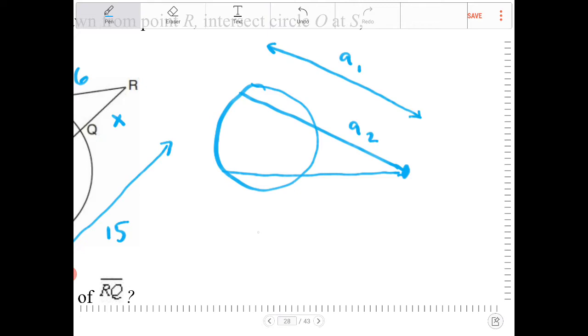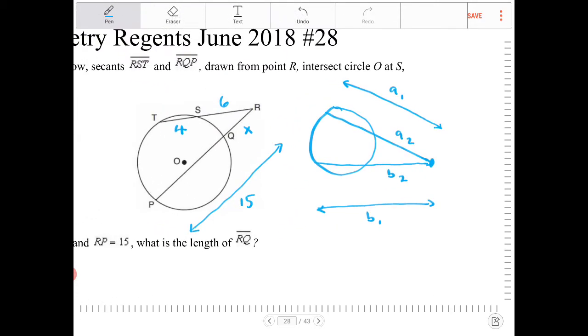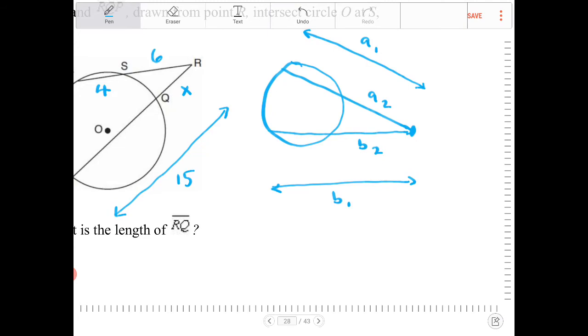And then the secant underneath, I'm going to call that secant B. I'm going to call that length B1. And I'm going to call the segment that's outside B2. As it turns out, this can be proven through a little bit of analysis involving similar triangles, that the following proportion is true, or the following equation is true.